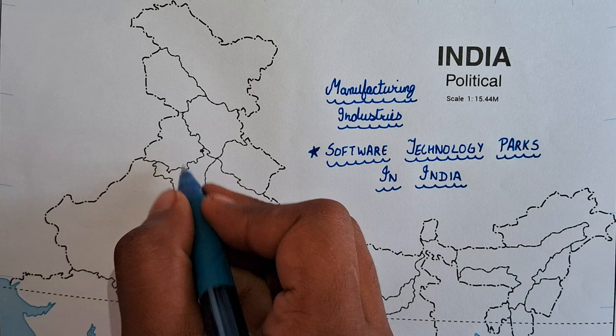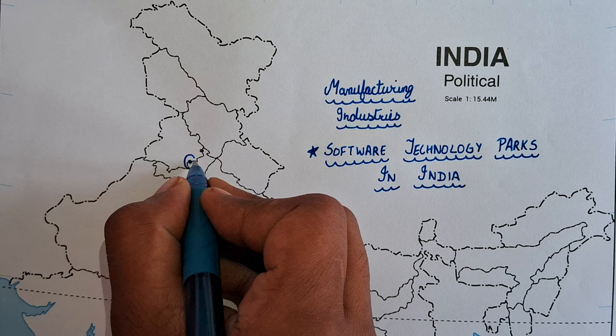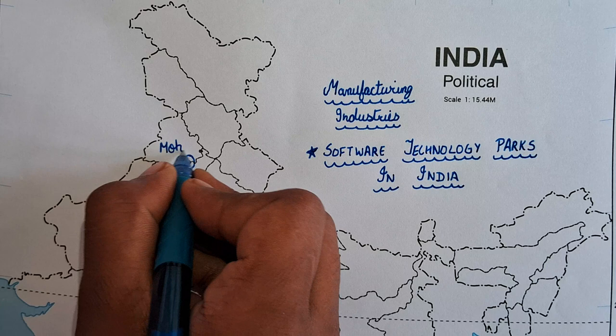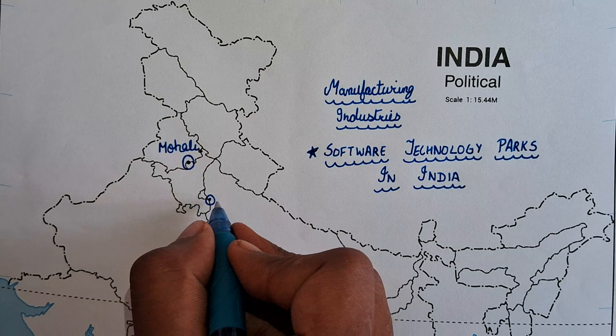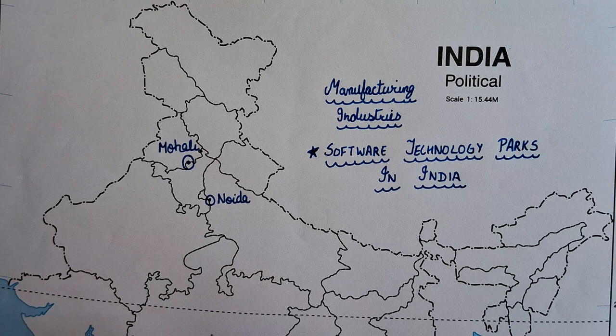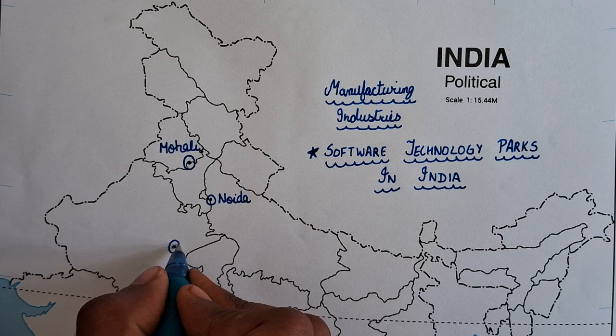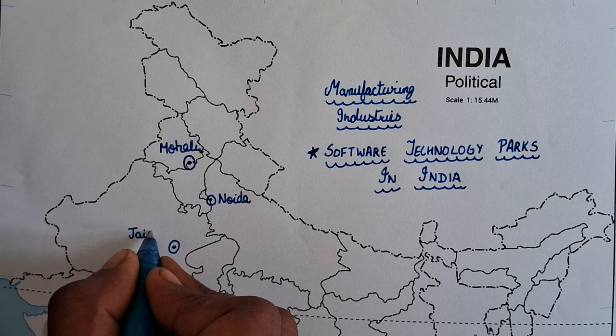In North India, at the border of Punjab and Haryana, here we have a software technology park. Next, in Mohali. Near Delhi, in UP, we have Noida. Next, in Rajasthan, here we have Jaipur.